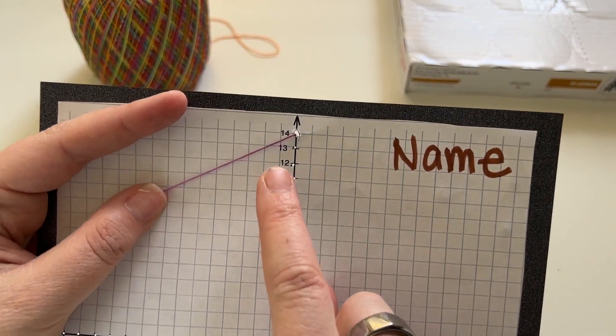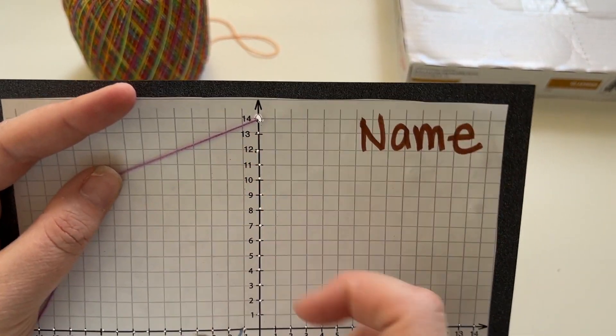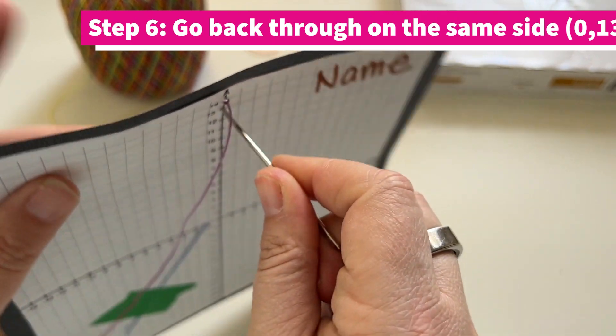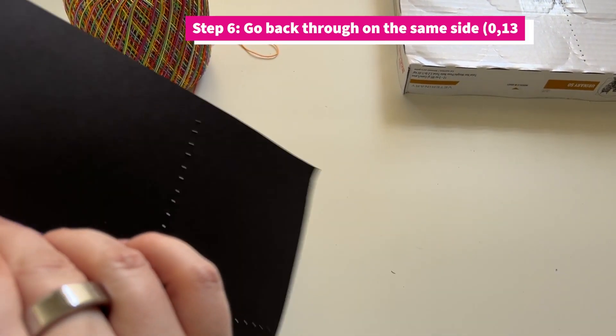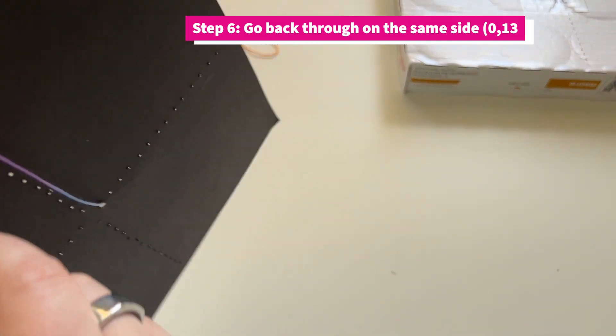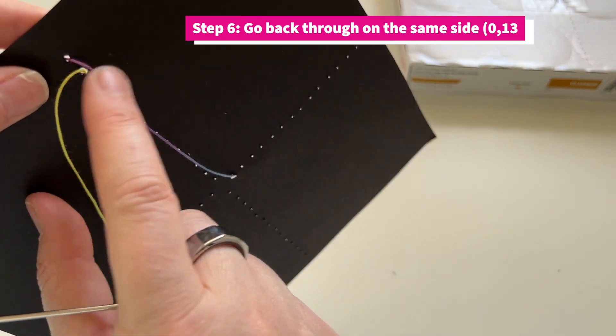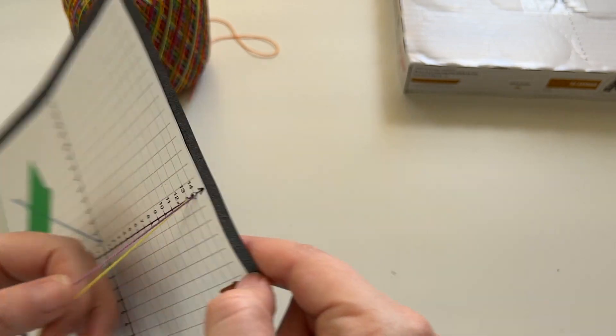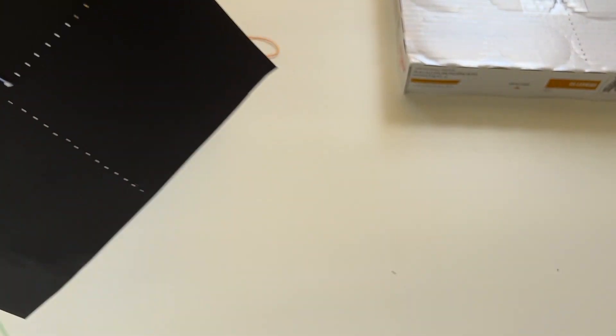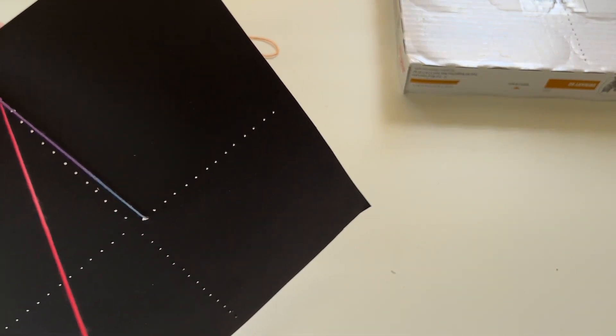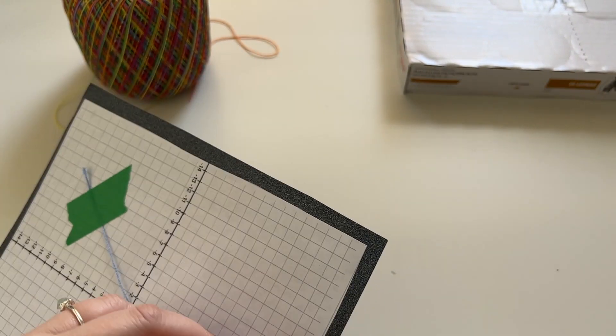Now at this point you're going to go in through 13 on the y-axis here, and we're going through the back to the front. You'll notice it comes out on this side of your first yarn. Same thing, pull it through and make sure it doesn't knot up.